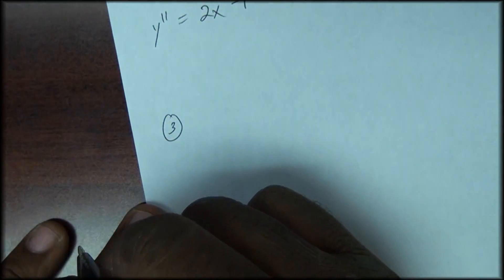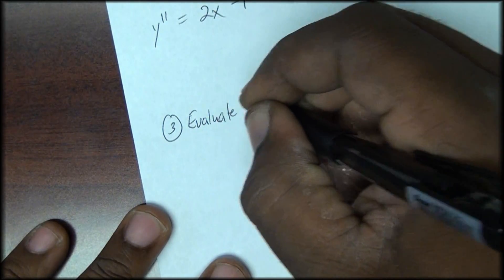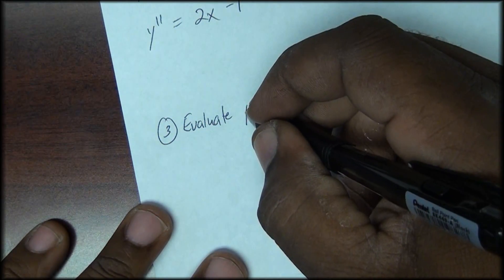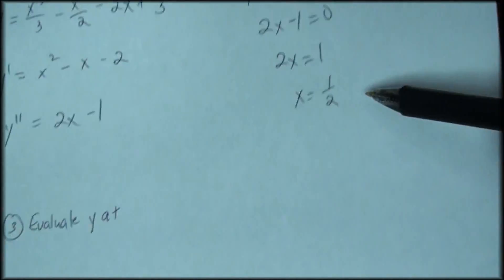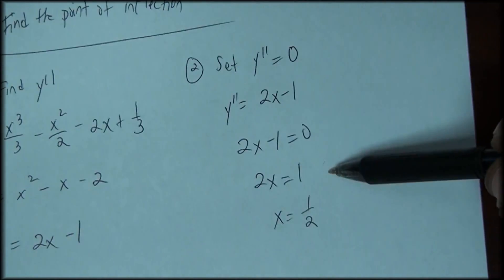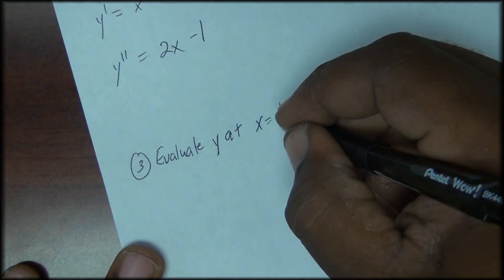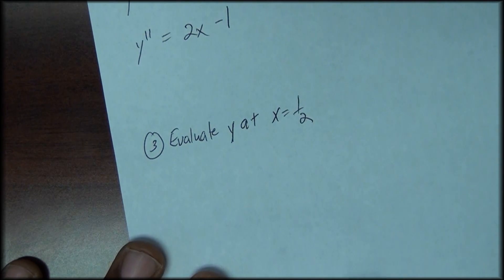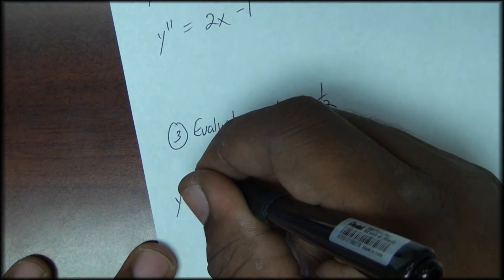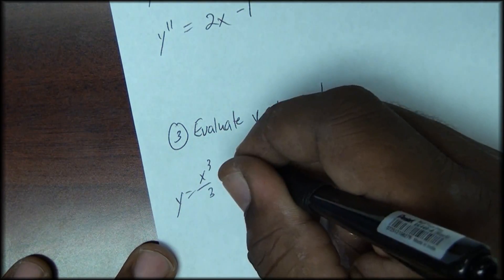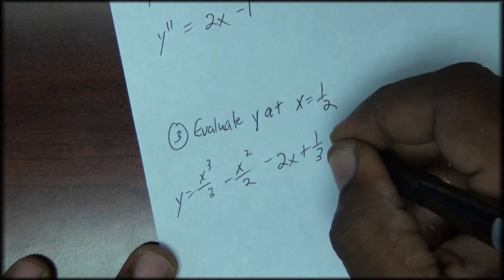The last step in finding the point of inflection is to evaluate y at the x-value where y double prime equals zero, which is x equals one-half. We substitute x equals one-half into our function: y equals x cubed over 3 minus x squared over 2 minus 2x plus one-third.